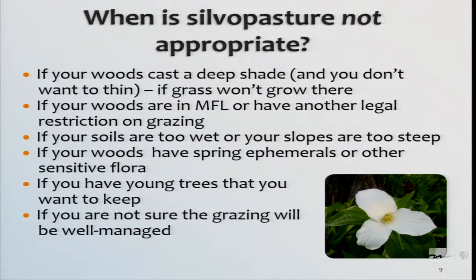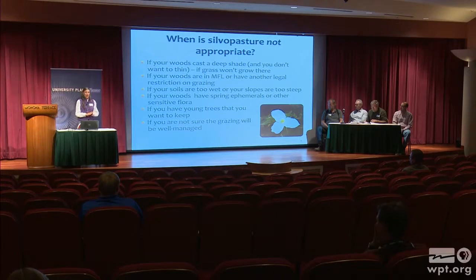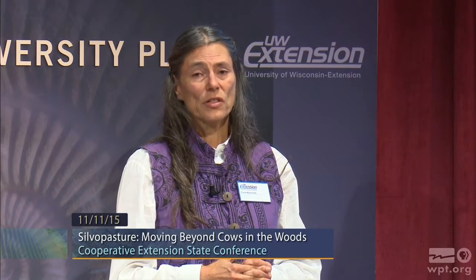If you have flora in your woods that are sensitive and would be displaced by establishment of grasses or forages, that would not be an appropriate site for silvopasture. One of the big challenges yet to solve is regenerating the next crop of trees — when you're trying to establish the next crop, you need to keep livestock out until they reach a certain size. And the grazing has to be managed very carefully because it is a more sensitive system.